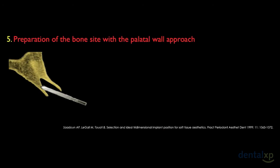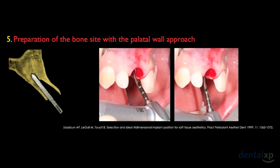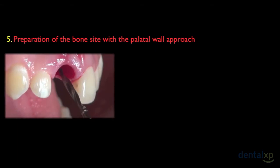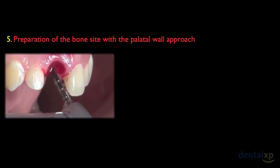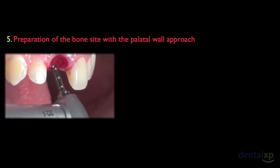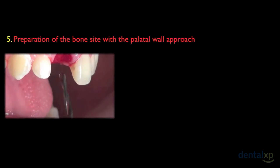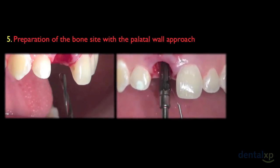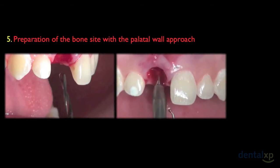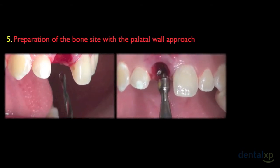The next step is preparation of the bone site with a palatal wall approach, as you can follow through this illustration. To do this, we introduce the first drill from the buccal to the palatal aspect using an angulation of 45 degrees. After deepening approximately 3 mm, we change the axis to a palatal inclination of the drill. After that, we introduce the other drills in accordance with the planned length. In this case, we will insert an implant of 16 mm in length.